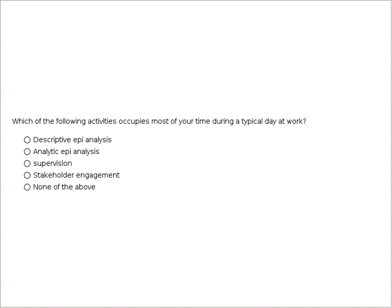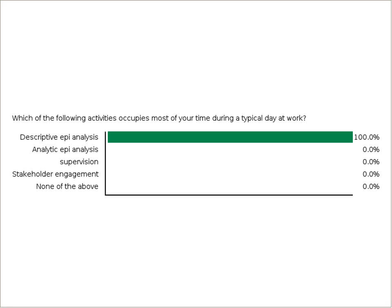I'm curious — which of the following activities occupies most of your time during a typical day at work? I have descriptive epi analysis, analytic epi analysis, supervision, and stakeholder engagement as options — plus none of the above if I didn't pick what you spend most of your time doing. So about 76% of you are mostly doing descriptive epi, which I did expect to see. There is a lot of descriptive epi to do, and like I said, it's very important work. What we're hoping through the training is to give you the tools for analytic epi so that you can use it as appropriate and as needed to really answer the consequential questions that come up in your agency.